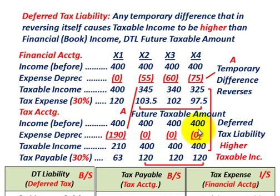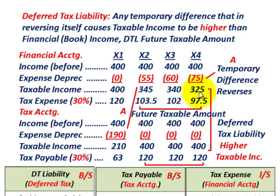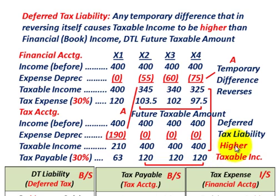Comparing financial to tax accounting: because of this timing difference that reverses itself, we reduce our taxable income and thus reduce our tax expense for financial accounting. With a deferred tax liability, our book income is less than our taxable income for tax accounting, solely because of that timing difference on recognizing expenses. This creates a future taxable amount — a higher taxable income for each of the next three years for tax accounting.